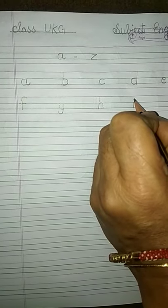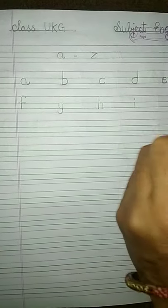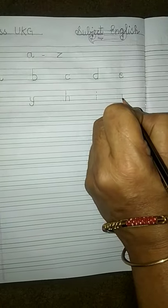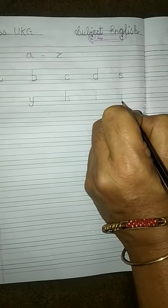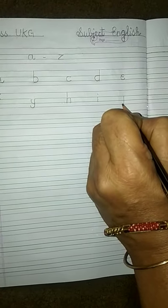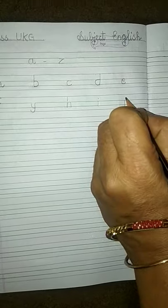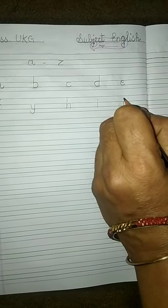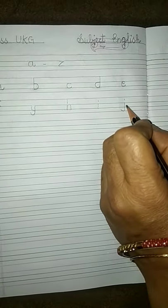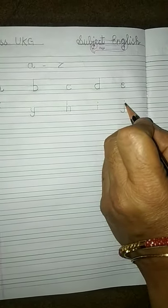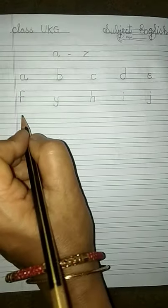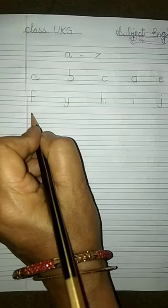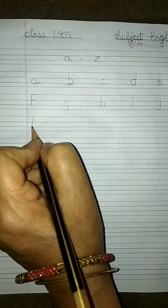J — one standing line from the first blue line to the fourth red line, and a small curve, and one dot above the line: J. Now K — one standing line up to the second blue line, and two slanting lines, one going left and one coming right: K.